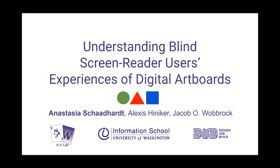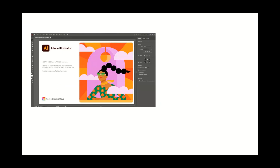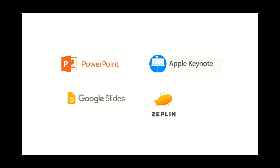An artboard is a two-dimensional digital canvas that's object-based, like Adobe Illustrator, as opposed to pixel-based, like Microsoft Paint. Creative and professional software applications involving artboards are prevalent in schools and offices around the world, and familiarity with such applications is an expectation of many employers.